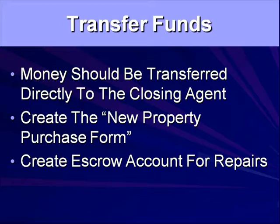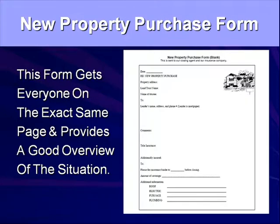I have a new property purchase form I created. You need to send information to the closing agent and also to the insurance company. I put both on the same piece of paper and just fax it twice — it saves a lot of time and effort and puts a system in place in my company. Many people end up with one form to the closing agent and then virtually the same information on a second form to the insurance company. I don't do that.